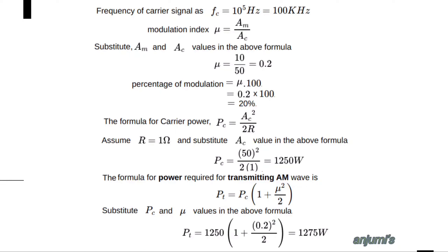Formula for power required for transmitting the AM wave: PT = PC × (1 + μ²/2). Substituting the values: PT = 1250 × (1 + 0.2²/2). When we solve, we get PT = 1275 watts.